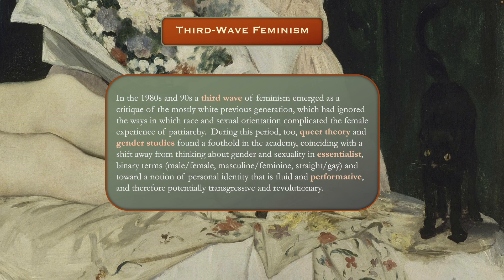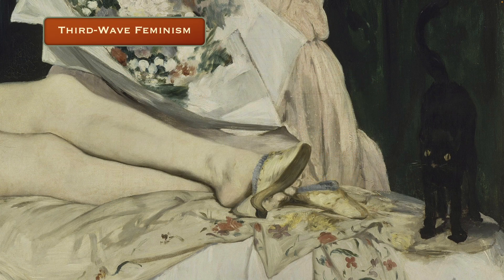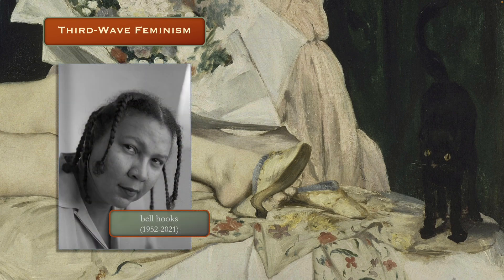These two words — essentialist and performative — should be highlighted. Pay attention to the way that Dobie talks about those two terms in chapter six. Because of the performative nature of identity, there is the potential for transgression and revolutionary change. Many of the women I talk about here associated with third wave feminism are now deceased — some of them died before their time.